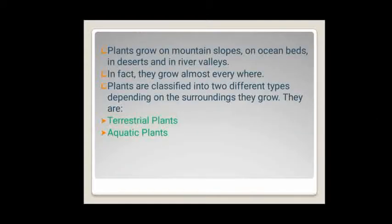Plants grow on mountain slopes, on ocean beds, in deserts and in river valleys. In fact, they grow almost everywhere. Plants are classified into two different types depending on the surroundings they grow. They are terrestrial plants and aquatic plants.